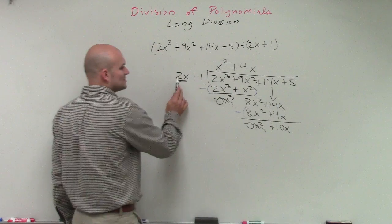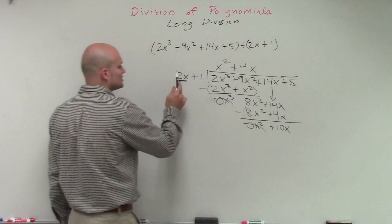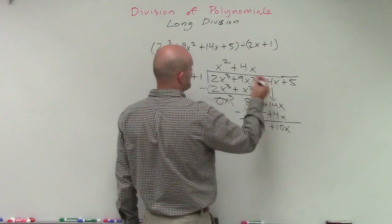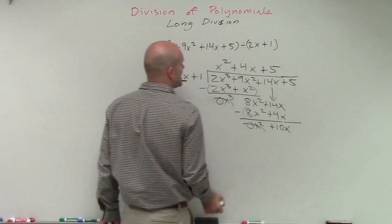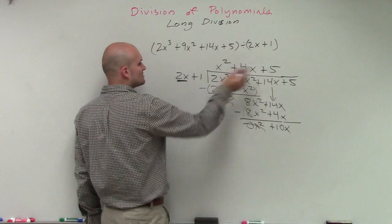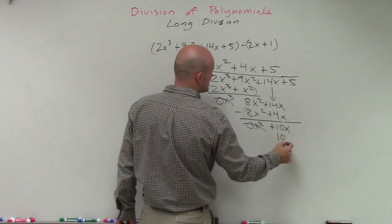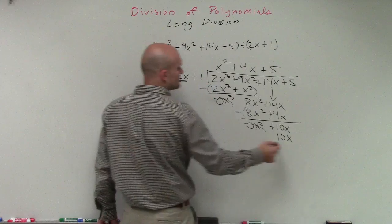Therefore, I take my divisor, first term of my divisor, and divide it into the term. 2x divides into 10x, a positive 5 times. Multiply this times 2x. 5 times 2x is going to be a positive 10x, and 5 times 1 is a positive 5.